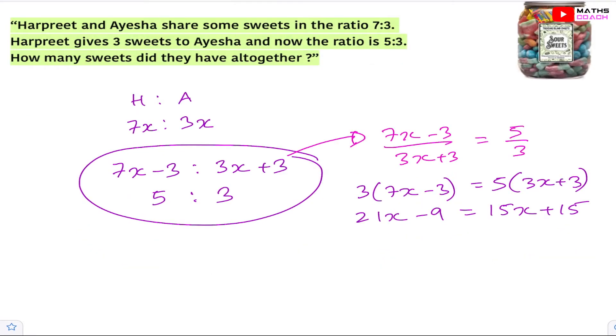And now we will take the x's onto one side. So the 15x can go over to this side giving us 6x, and then minus 9 will go over to the other side giving us 24. So now we can have x is equal to 24 divided by 6 which is 4. So x is equal to 4.